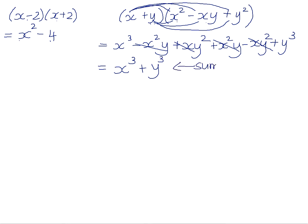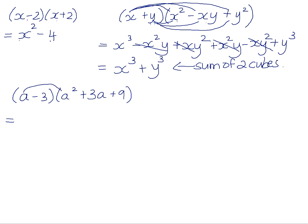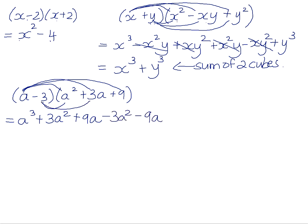We can call this the sum of two cubes. x cubed is a perfect cube, y cubed is a perfect cube, and we are adding them. That gives us a predictable answer. Now, doing the same thing with (a minus 3)(a squared plus 3a plus 9): a cubed plus 3a squared plus 9a minus 3a squared minus 9a minus 27. Tidying up, the 3a squared terms cancel and the 9a terms cancel, leaving a cubed minus 27, which we call the difference of two cubes.